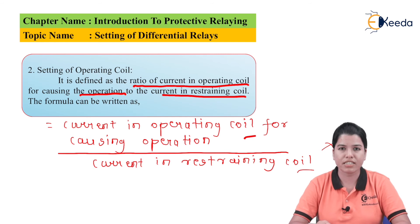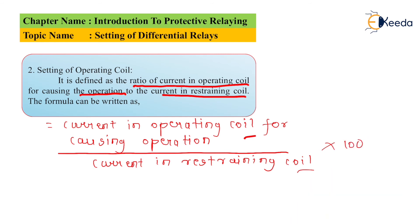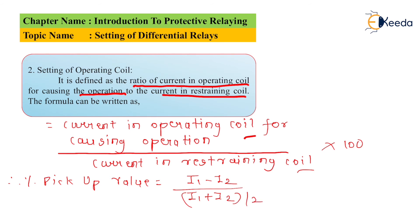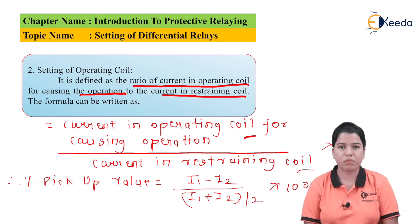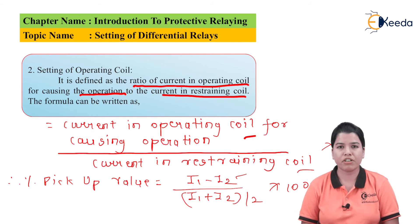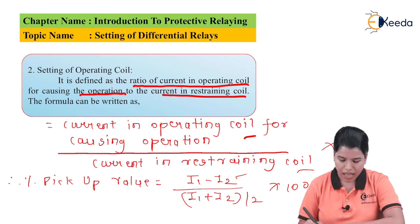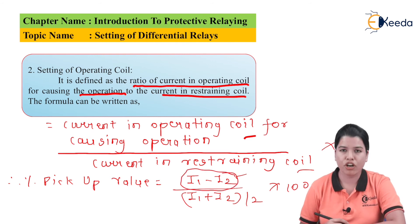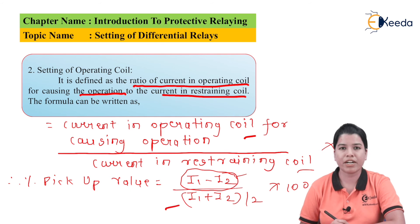We can further modify this equation. Therefore, percentage pickup value is equal to (i1 minus i2) divided by (i1 plus i2 divided by 2), multiplied by 100. Here, i1 minus i2 is the value of current in the operating coil, and (i1 plus i2) divided by 2 is the current in the restraining coil.